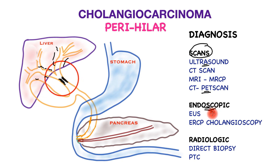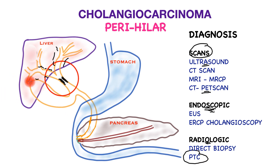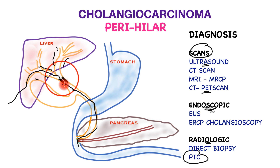If endoscopy is not successful, a radiological procedure called PTC (percutaneous transhepatic cholangiography) is performed, where under ultrasound and fluoroscopic X-ray guidance, flexible wires are inserted through the skin into the bile tube, traversing the stricture and traveling down into the small bowel. These are then used to insert brushes that catch cancer cells, or to obtain a direct biopsy of the site.